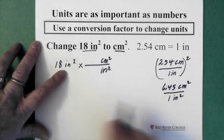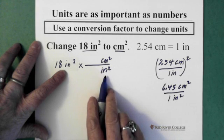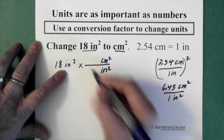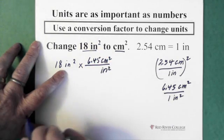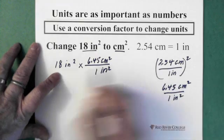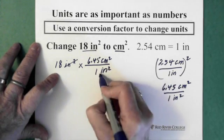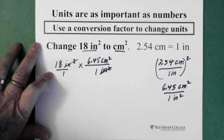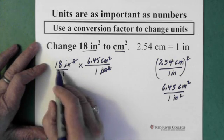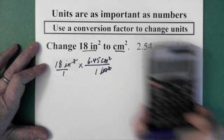I already have centimeters squared over inches squared here. All I need is the numbers. So, I put my numbers in here. 6.45 and 1. The inches cancel, and the reason is we're multiplying two fractions here. And we're left with 18 times 6.45.